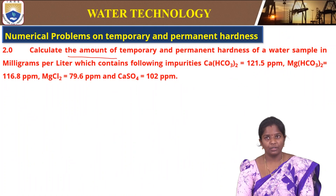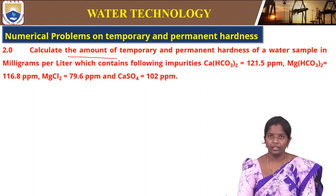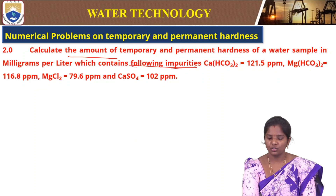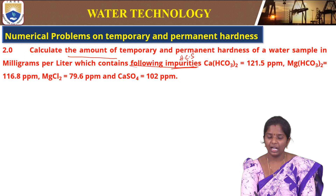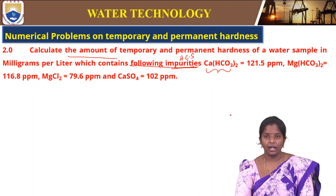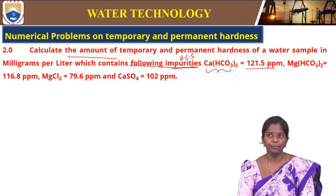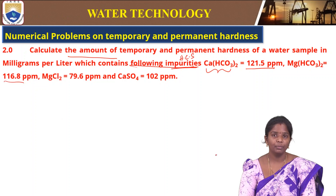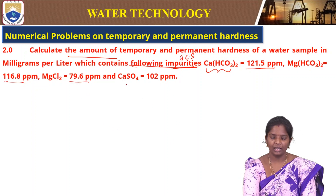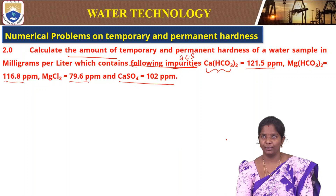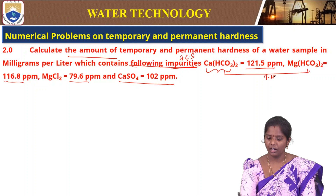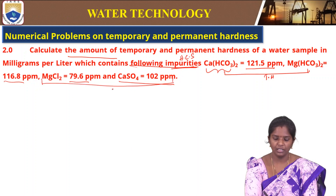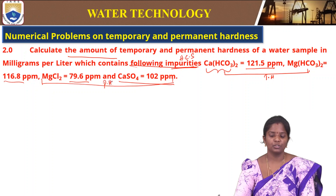Calculate the amount of temporary and permanent hardness of a water sample in mg per liter containing the following impurities (hardness-causing salts): calcium bicarbonate 121.5 ppm, magnesium bicarbonate 116.8 ppm, magnesium chlorate 79.6 ppm, and calcium sulfate 102 ppm. Bicarbonates are responsible for temporary hardness; chlorate and sulphate are responsible for permanent hardness.